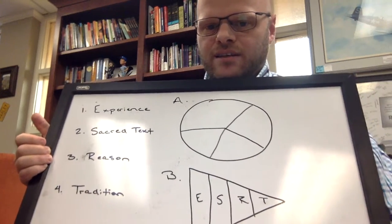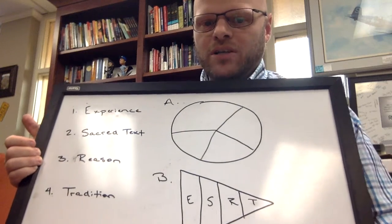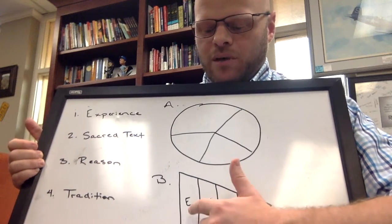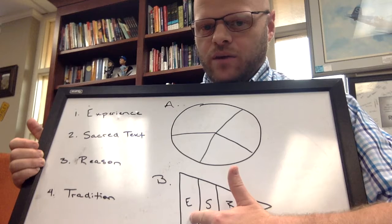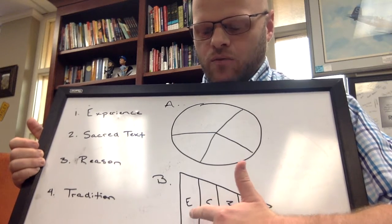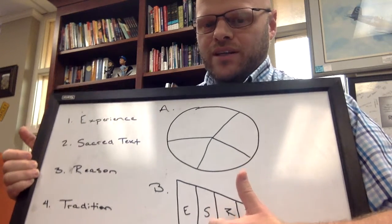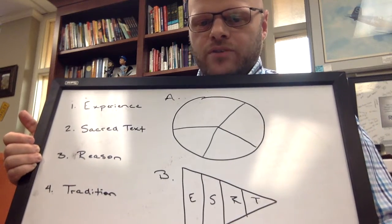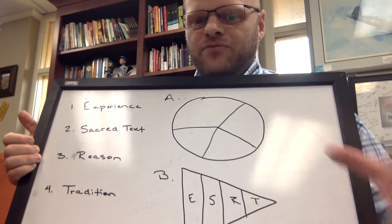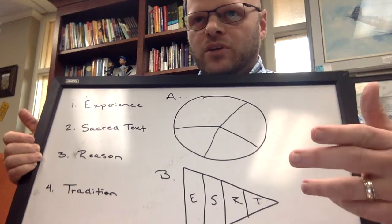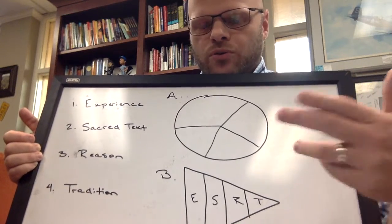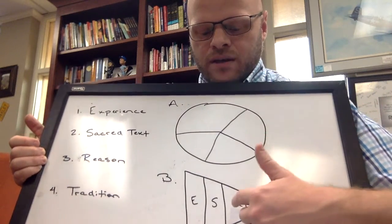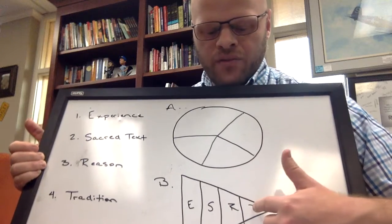Now, I've intentionally done this in what I think is a poor order, but to show you that you might say, my experience is the norm to begin with. It gets the most weight. And then I read scripture through the lens of my experience. We talked about this with divorce and remarriage a few weeks ago, how we filter our own personal experiences, or we filter scripture through the lens of our personal experiences, then reason, then tradition.